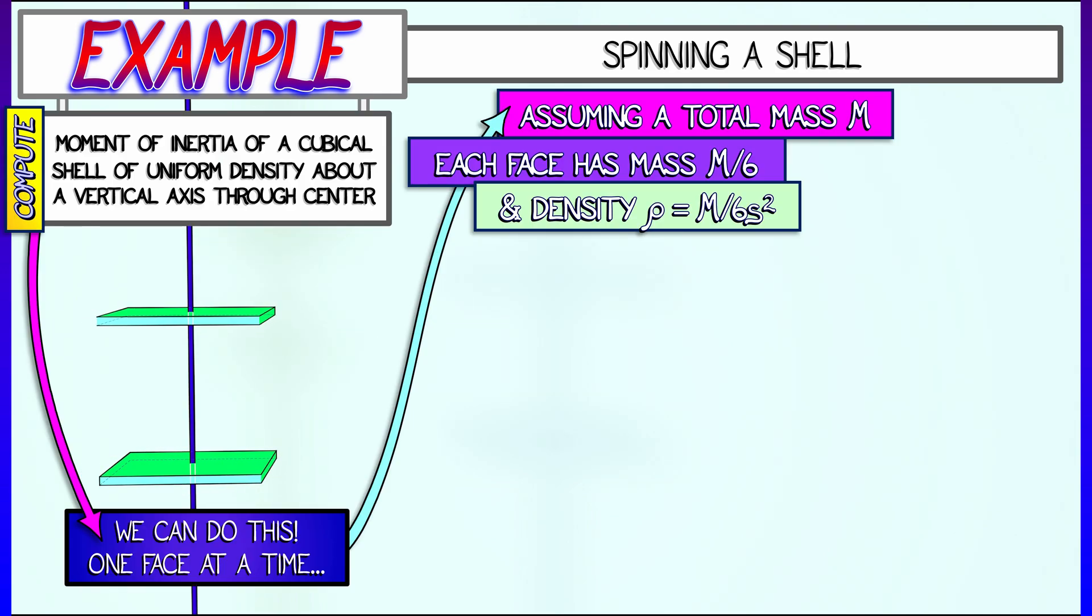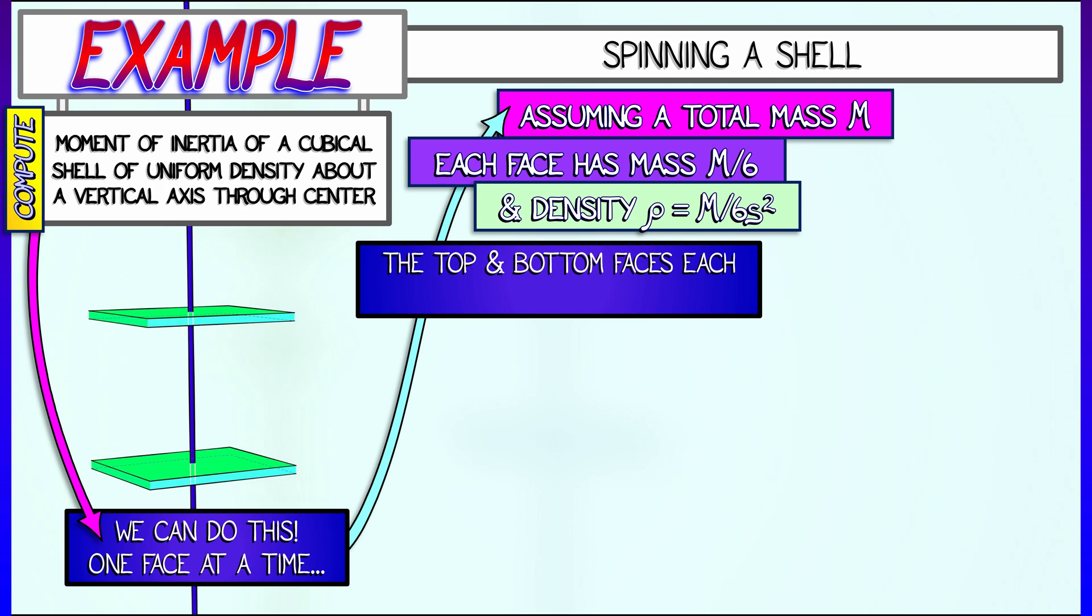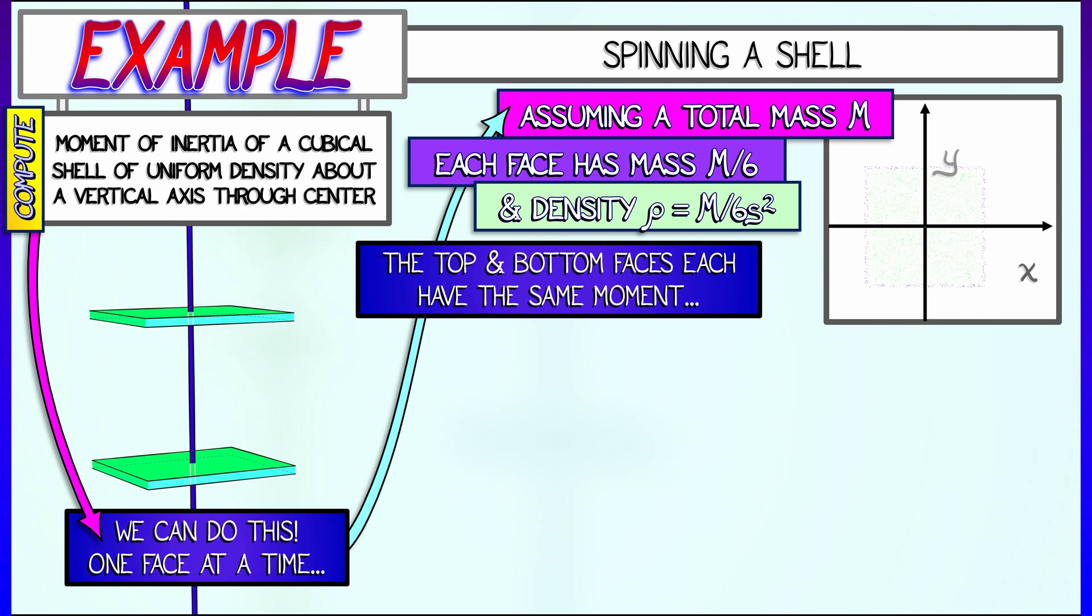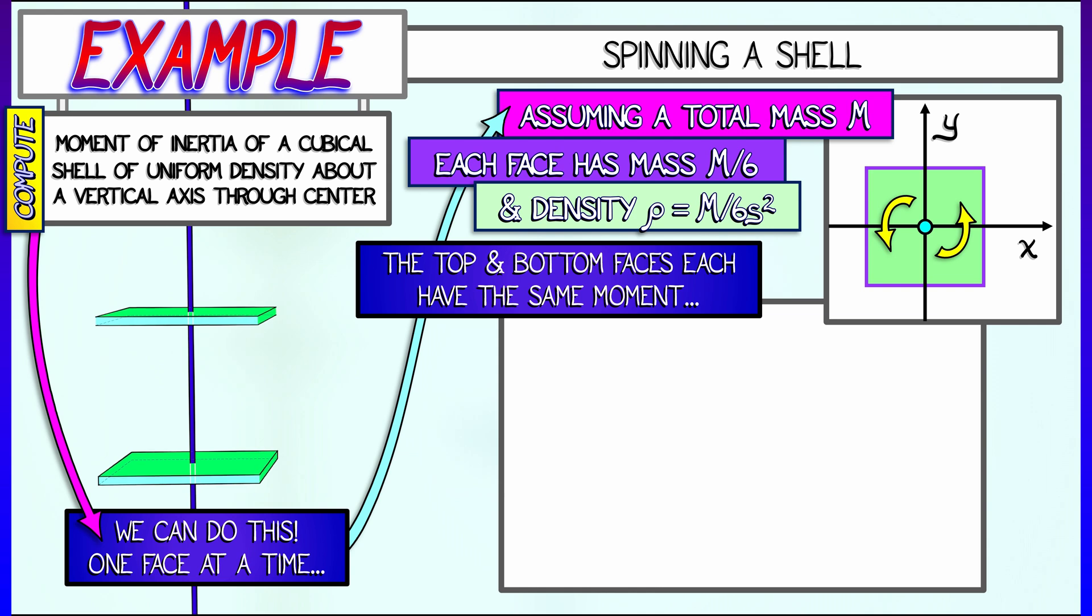With that plan in mind, let's work with the top and the bottom face first. Each of those has the same moment of inertia. Let's compute that working in the xy plane, where x and y go from minus s over 2 to plus s over 2. The moment of inertia element is quantity x squared plus y squared times the mass element, ρ dx dy.